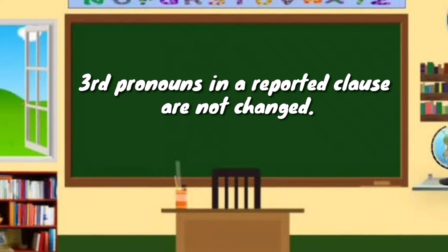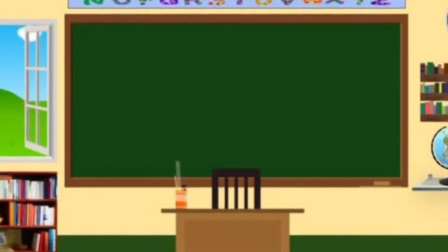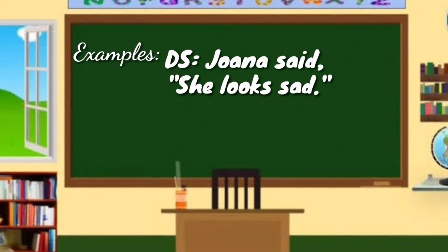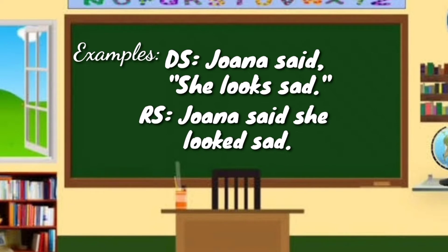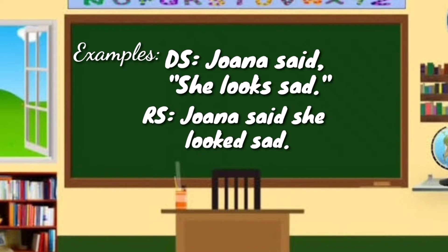Third person pronouns in the reported clause are not changed. For example — DS: Joanna said, 'She looked sad.' RS: Joanna said she looked sad. The third person pronoun 'she' in the direct speech does not change when transformed into reported speech.